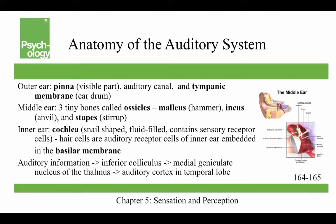That vibration results in movement of the ossicles, which makes the stirrup press on an area of the cochlea known as the oval window. That moves fluid in the cochlea, stimulating hair cells embedded in the basilar membrane. The stimulation of the hair cells leads to the experience of hearing. Auditory information goes to the inferior colliculus, then to the medial geniculate nucleus of the thalamus, and then onto the auditory cortex in the temporal lobe for further processing.